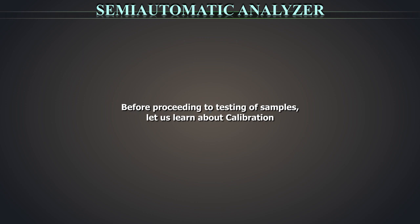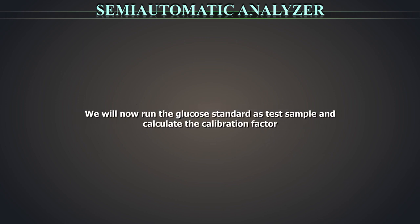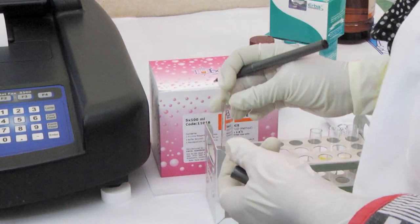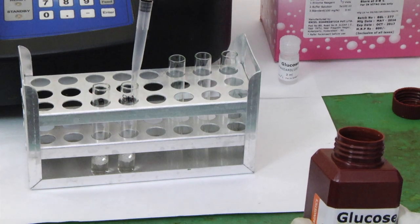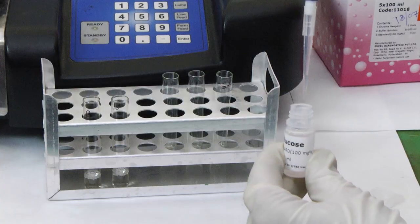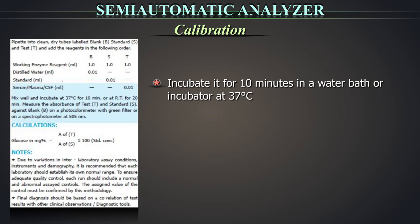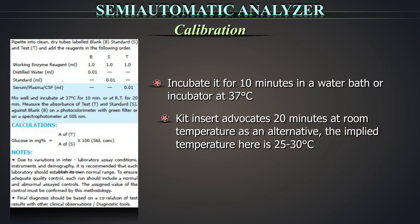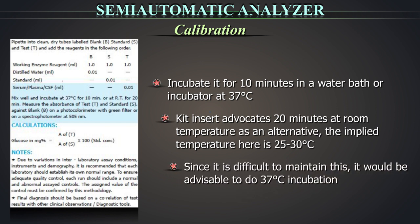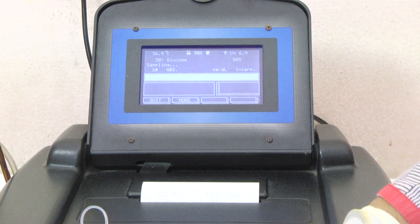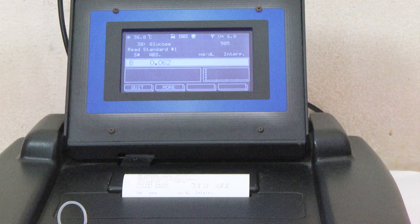Before proceeding to testing of samples, let us learn about calibration. We will now run the glucose standard as test sample and calculate the calibration factor. Label two test tubes as standard and blank. Take 1 ml of working reagent in both test tubes. Take 10 µl of standard with a pipette, wipe off the excess with a tissue and add it to the standard test tube. Incubate it for 10 minutes in a water bath or incubator at 37 degrees. Aspirate the blank test tube, i.e. the one without the standard, and read the absorbance. Here it is 0.062.